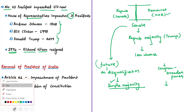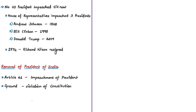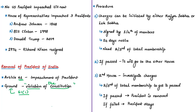Now let's come to the procedure for impeachment of the Indian president. Article 61 deals with this procedure. Article 61, Clause 1 mentions the ground for which a president can be impeached — that ground is violation of the Constitution. The Constitution, however, does not define what is meant by violation of the Constitution.